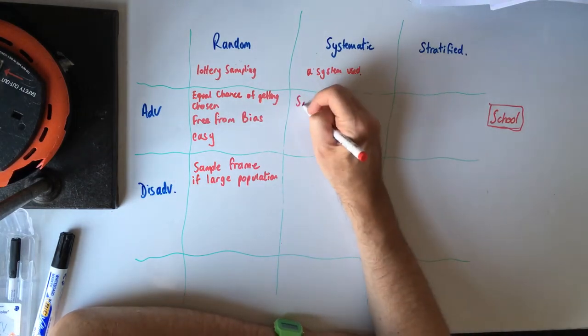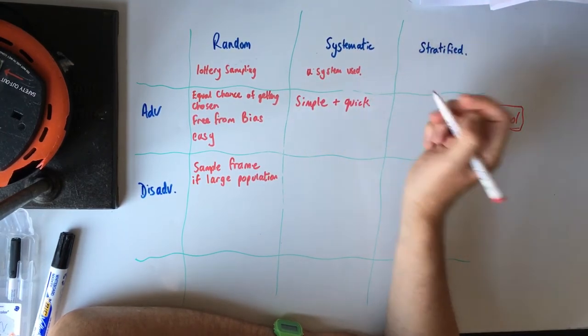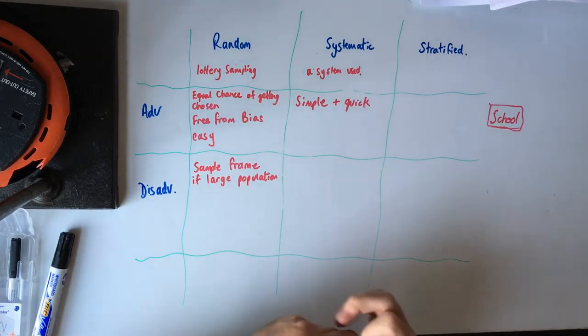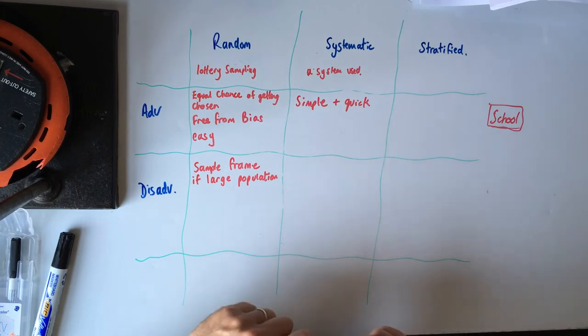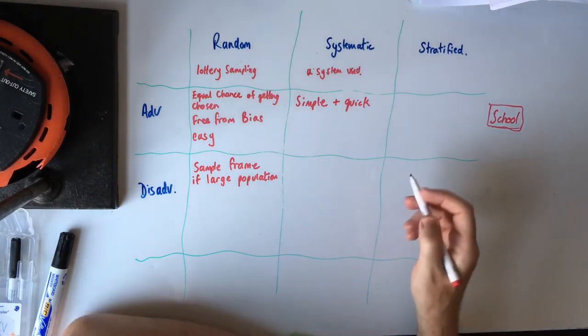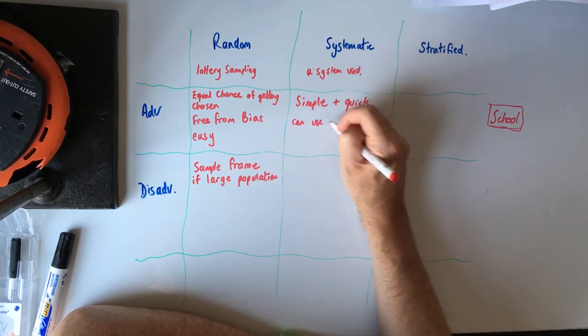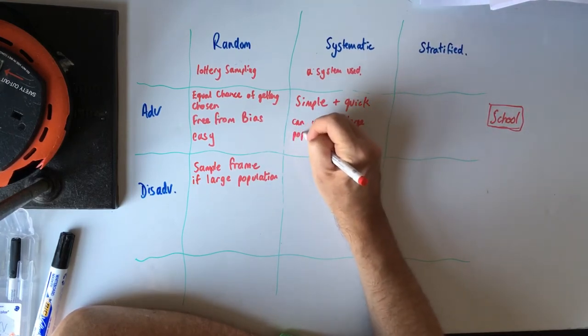So the advantage, again, it's simple. Simple and quick. As soon as you decide, you might decide to choose every 20th person or something like after that. And it's suitable for large populations. So you've got a large population. You can, you know, if you've got a million people, you can choose every thousandth person. Quick and simple. Can use for large populations.